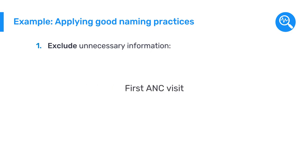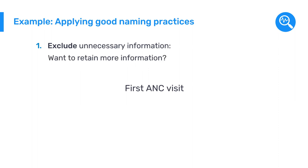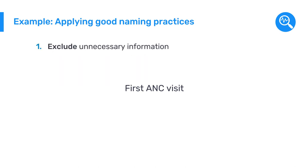By cutting any unnecessary words, we can keep it short and simple. If we decide that we want to retain more descriptive information about the data element, we can include it in the description field instead of the name. Second, identify the key information and put it at the beginning of the name. After cutting the words down, we are left with 'first ANC visit.'